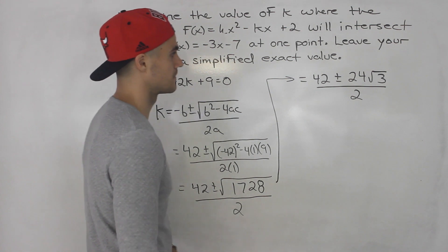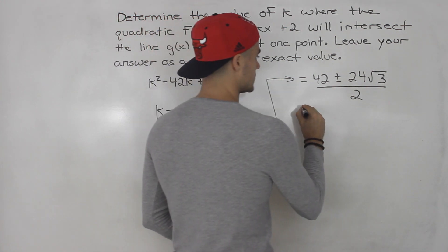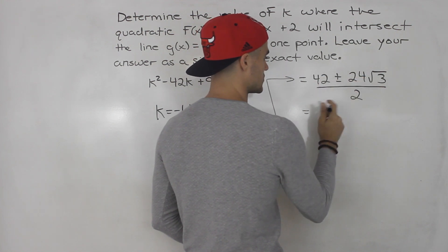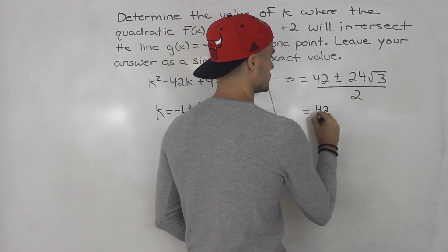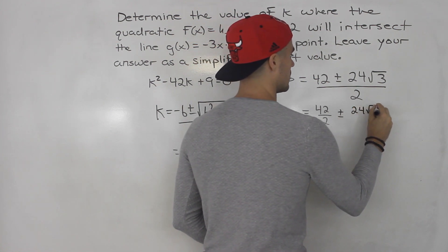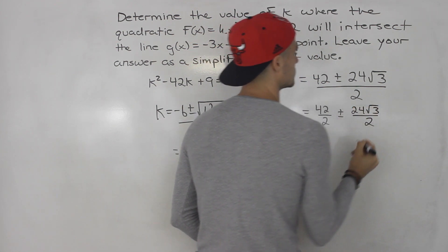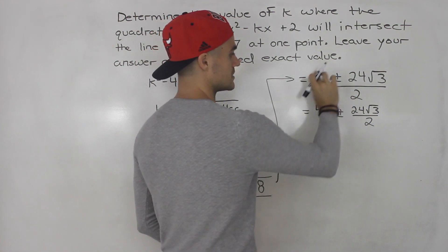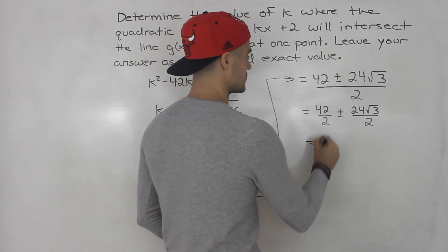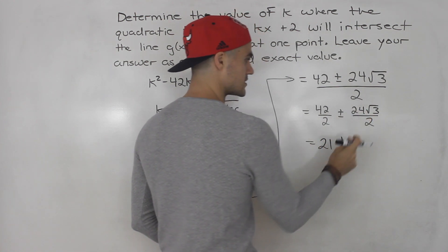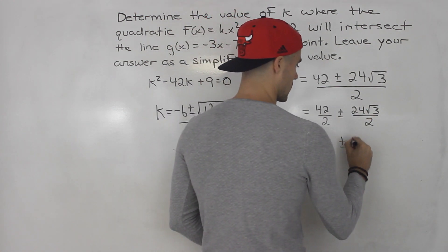And we're going to be dividing by 2. That denominator is still there. And then what we can do is once we have something in front here, we can split this 2 up into both. So we could do 42 over 2 plus or minus 24 root 3 over 2. We just split that denominator up into these two expressions. 42 over 2 is just 21.